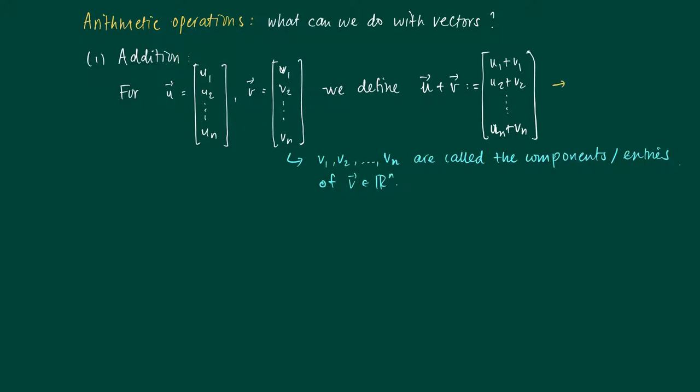The second operation that we will allow for is scalar multiplication. So the second manipulation of vectors that we will allow for is scalar multiplication.